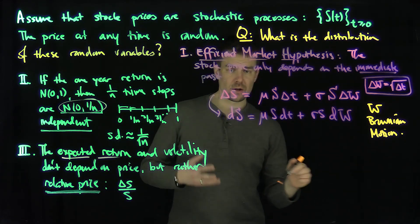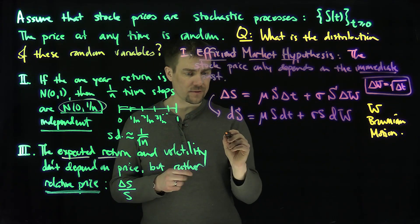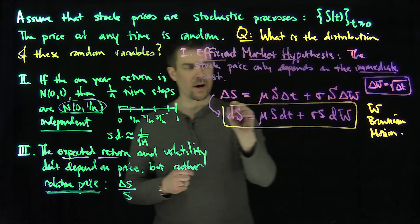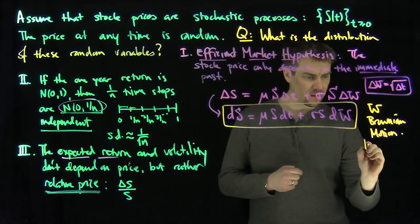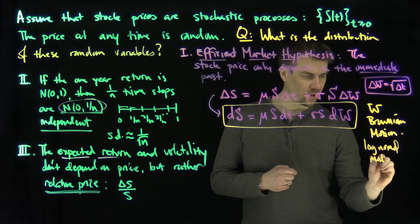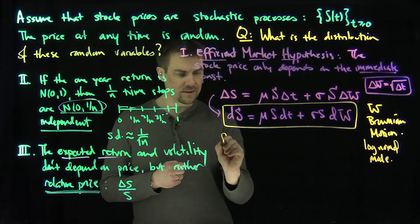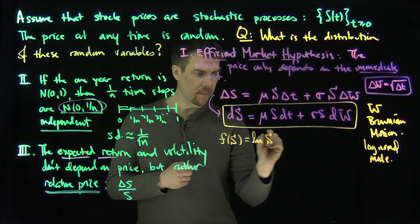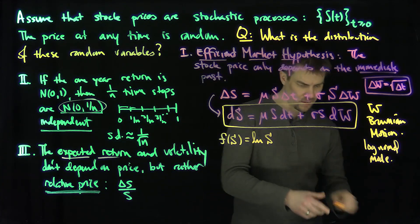This allows us to conclude the following. This is our log-normal model of stock growth. Let me explain why it's log-normal. If we consider F(S), which is just the natural log of S, and we use Ito's formula.